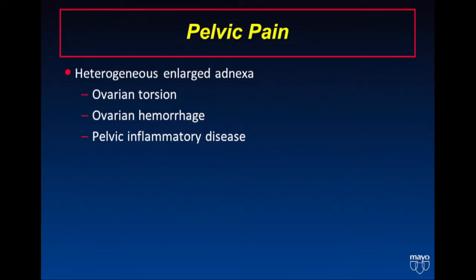The main differential diagnosis when you see heterogeneously enlarged adnexal findings in patients who present with acute pelvic pain are ovarian torsion, ovarian hemorrhage, and pelvic inflammatory disease.